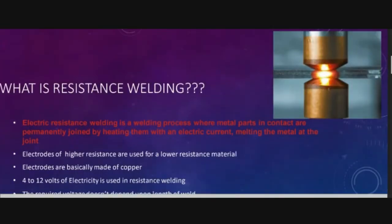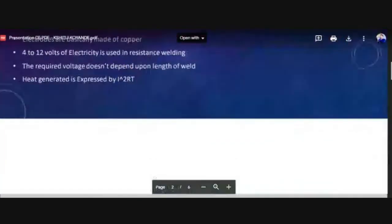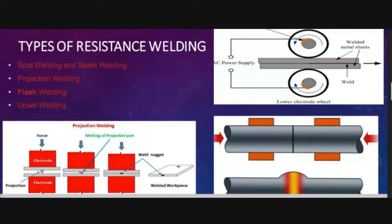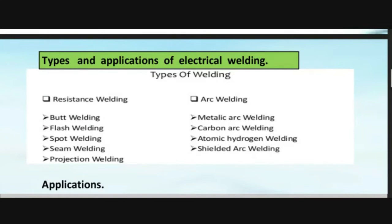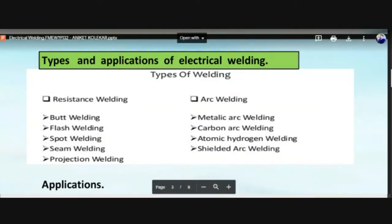Write down in your notebook: types of electric welding. The first type is electrical resistance welding, which has four subtypes: spot welding, seam welding, projection welding. The second type is electric arc welding, which includes metallic arc and carbon arc welding, then atomic hydrogen welding and shielded arc welding.